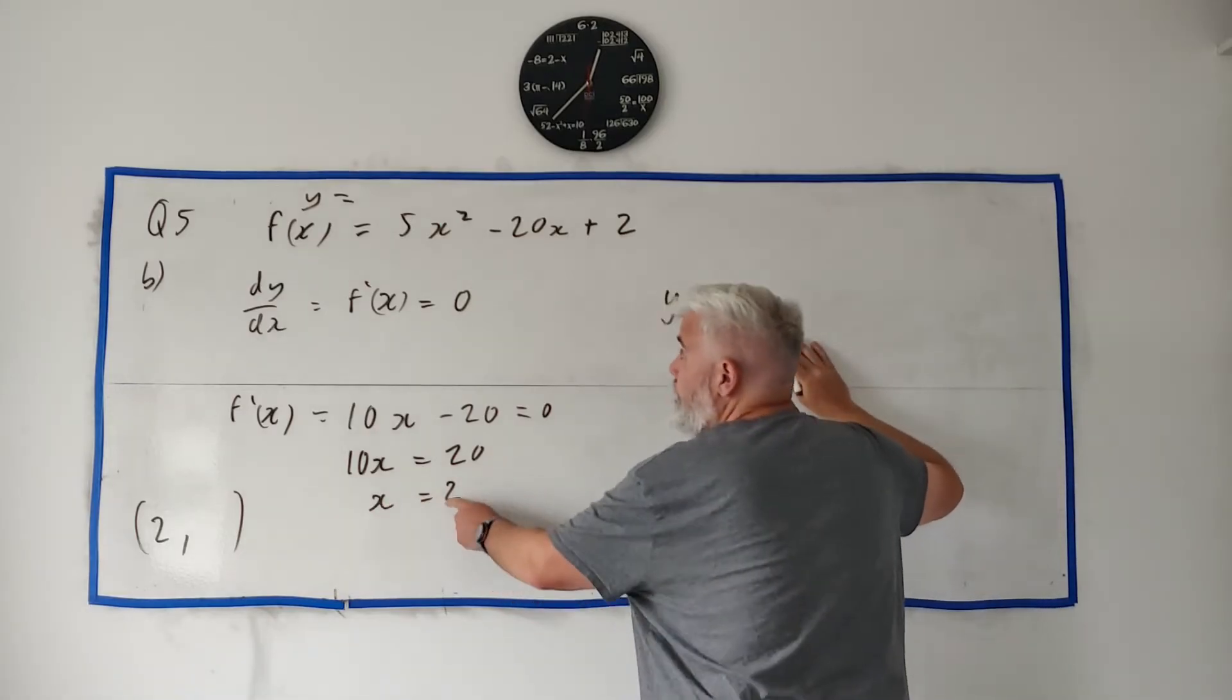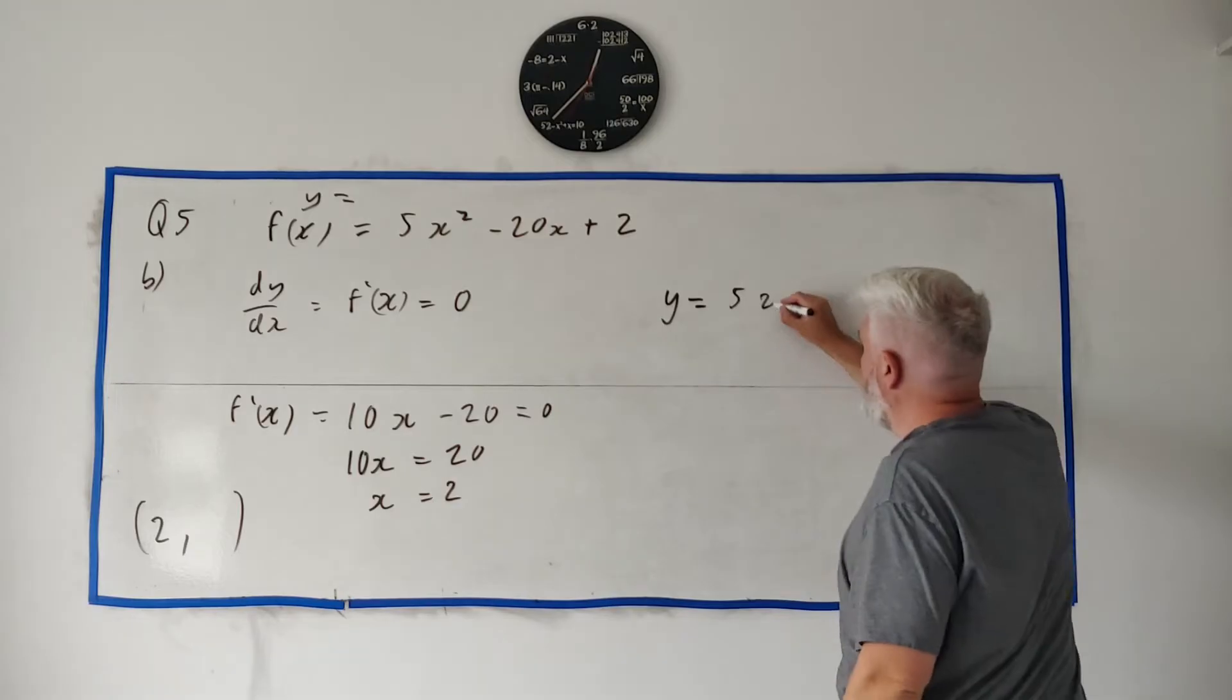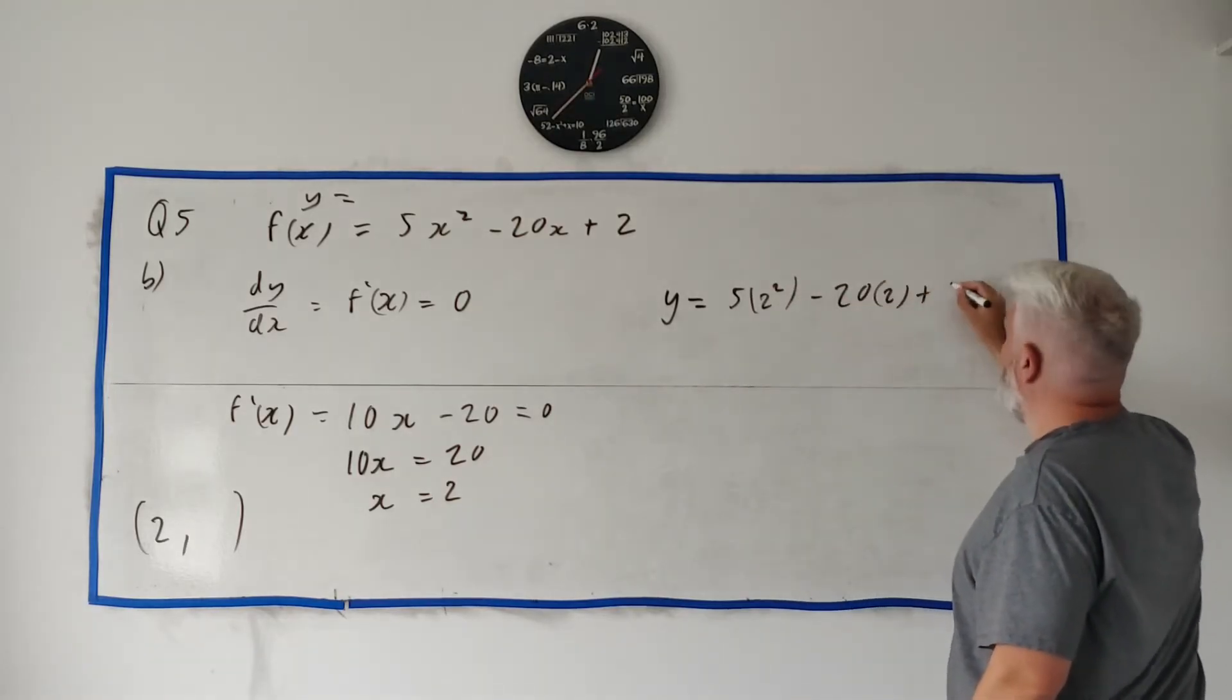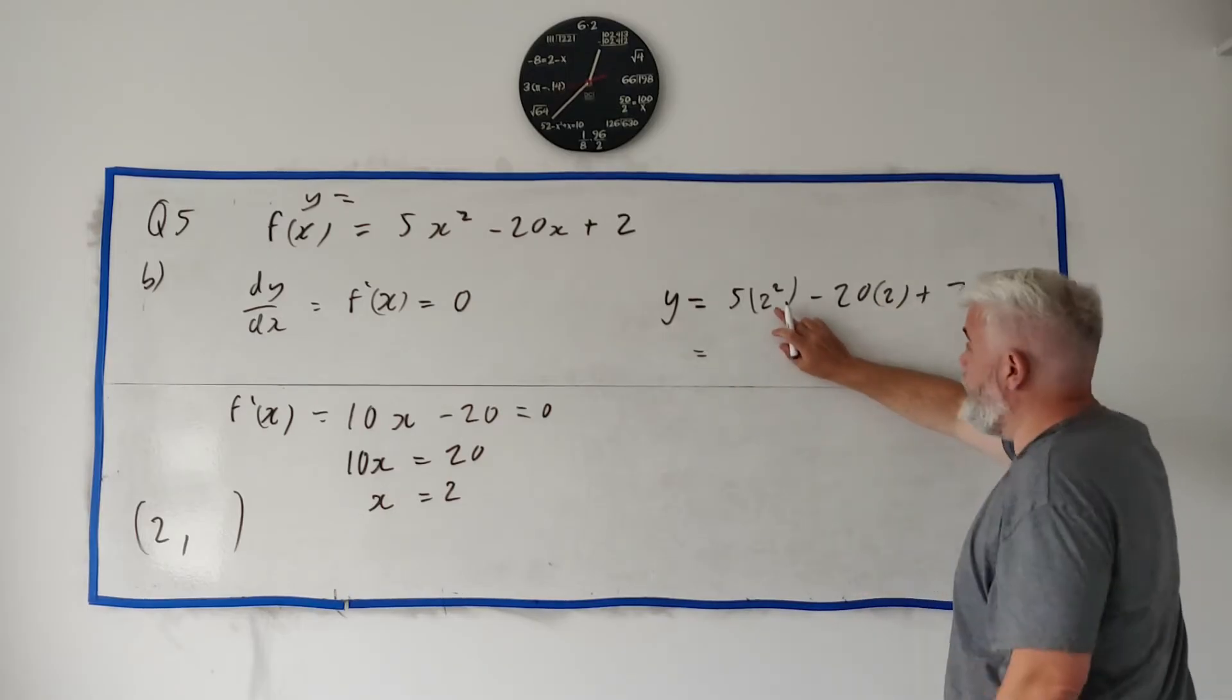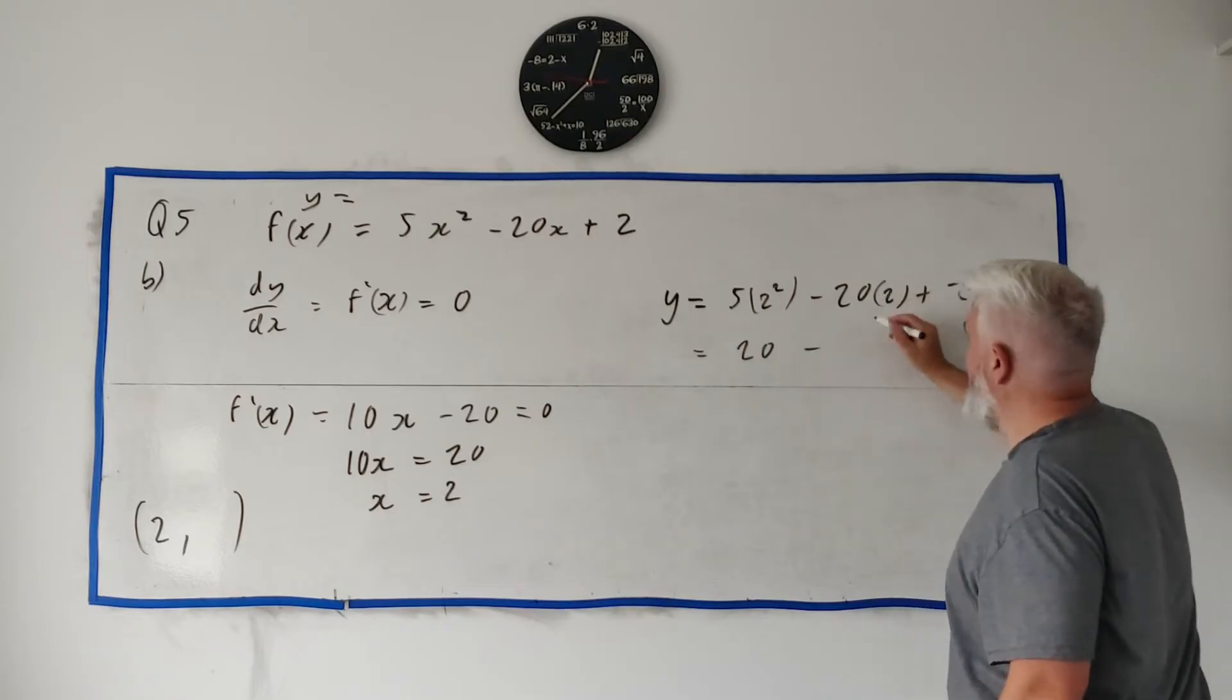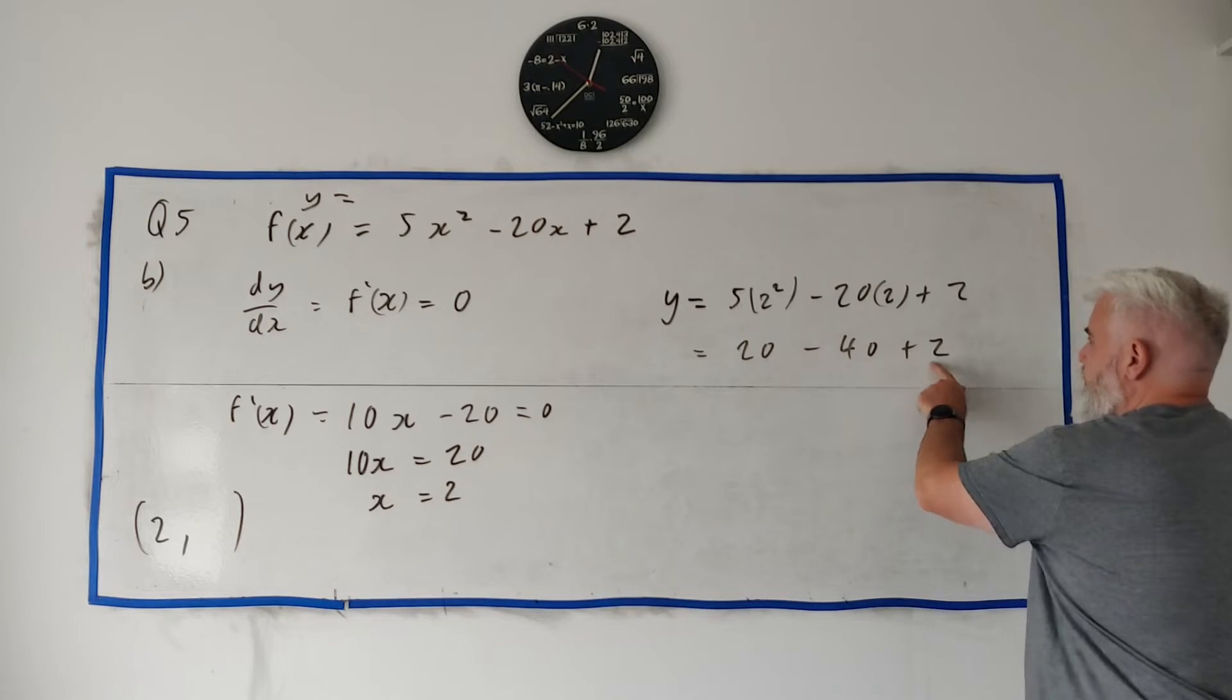So what is y? y is equal to 5 times 2, remember we know x at this point, at y we know x, so 2 squared minus 20 times 2 plus 2. That's what y is equal. That's 4 times 5 which is 20 minus 40 plus 2, that's minus 20, minus 18.